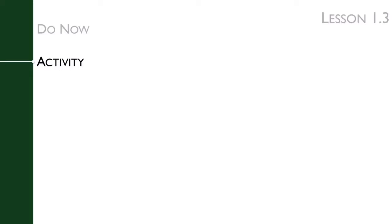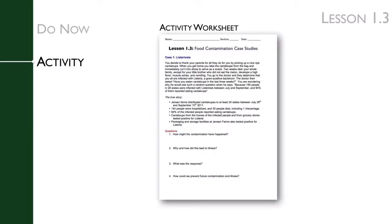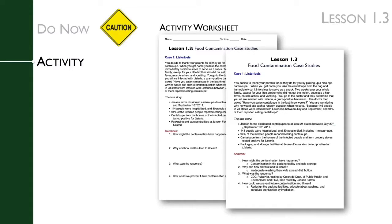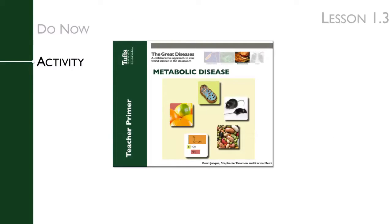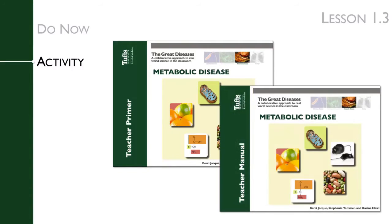Students should point out the differences and similarities between a pathogen-based illness and mercury poisoning. To help students focus on the most important details, give each student an activity worksheet covering: how might this contamination have happened, why and how did this lead to an illness, what was the response, and how could we prevent future contamination and illness? Caution: review the jigsaw readings to make sure they are at an appropriate level for your class. More advanced versions are available on the website. You can review all this information in the jigsaw worksheet answer key. The teacher primer and teacher manual also go over the key scientific concepts.